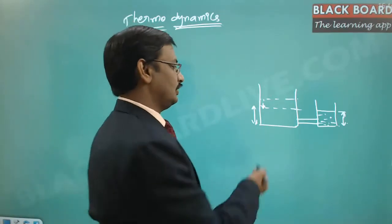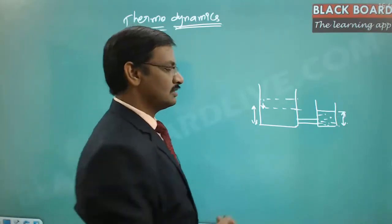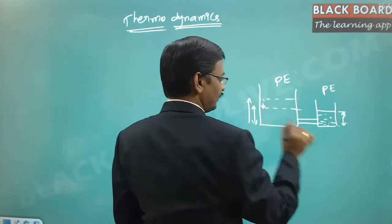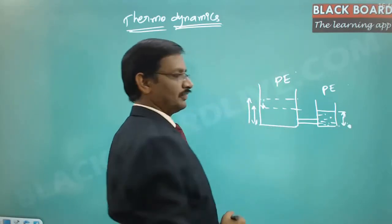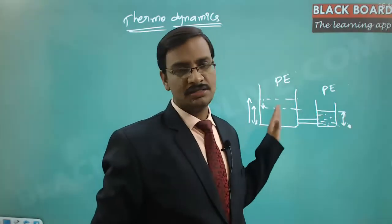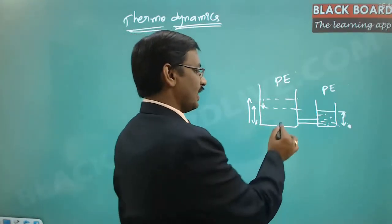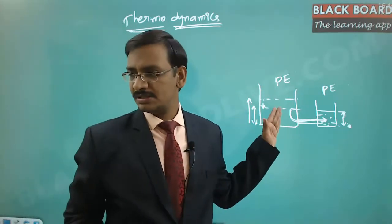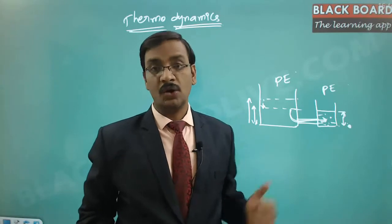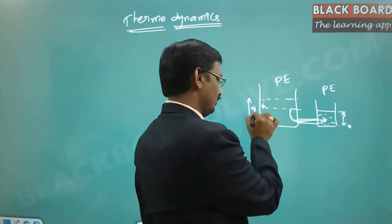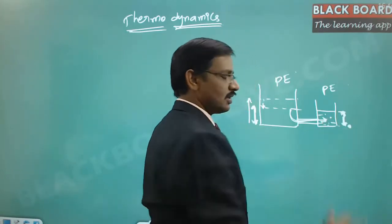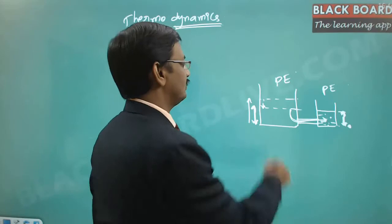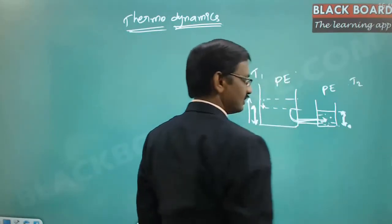In terms of thermodynamics, the difference between these two bodies is their potential energy — one is at a higher level and the other has no water, so no potential energy. The body with higher potential energy will always try to give energy to the other, and water flows till there is a balance. The equivalent of that difference in thermodynamics is temperature.